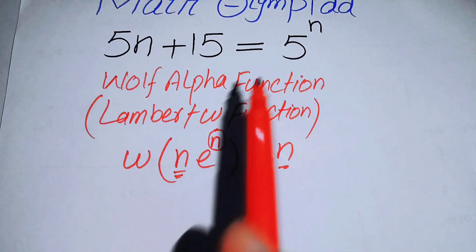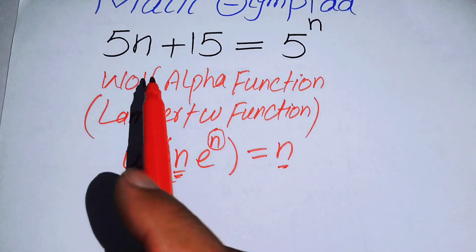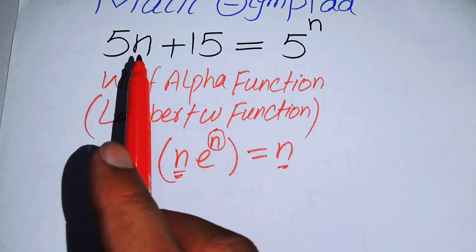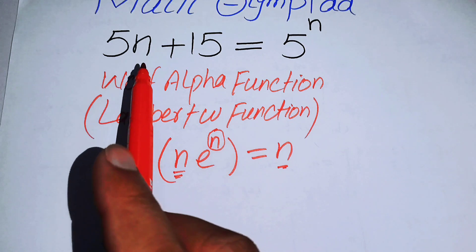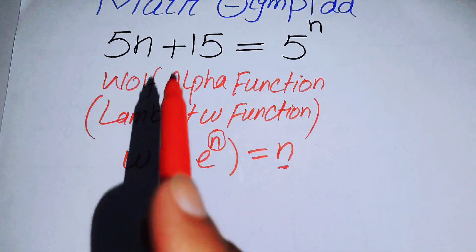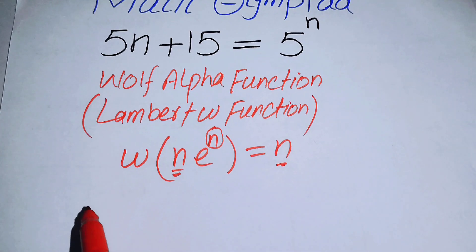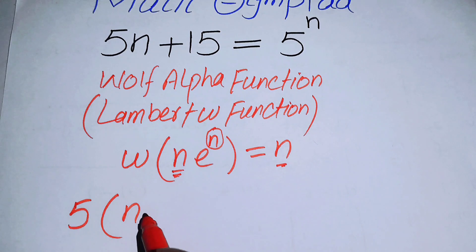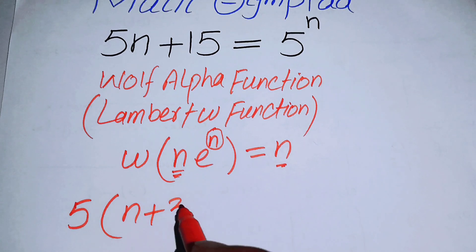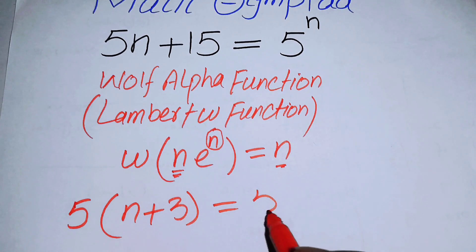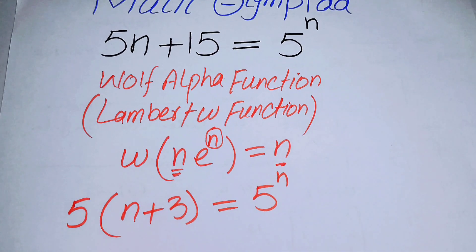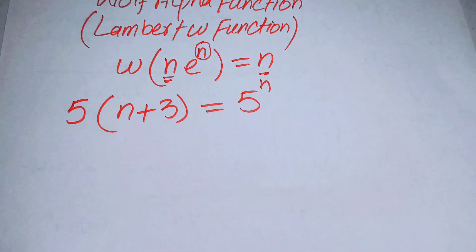Now we can use this function to solve our problem. The very first thing we do is take out a common factor of 5 on the left hand side, and write it as 5 times of n plus 3 equals 5 to the power of n.